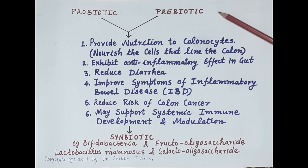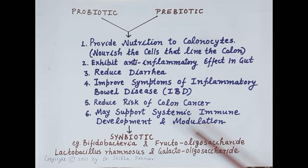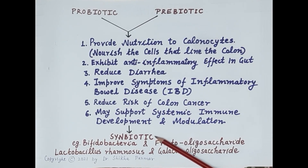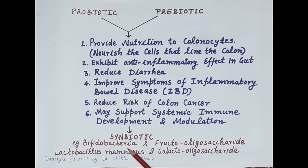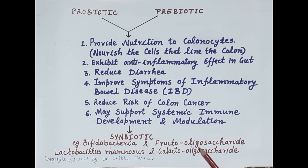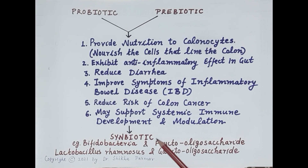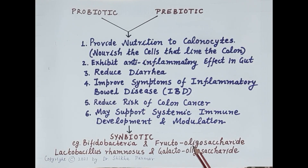A mixture of probiotic and prebiotic is called a symbiotic. This combination is a synergistic combination. For example, Bifidobacteria — a beneficial bacteria (probiotic) — combined with fructooligosaccharide (the dietary fiber, i.e., the prebiotic). Another example of a symbiotic is Lactobacillus rhamnosus and galactooligosaccharide. This mixture is beneficial as it consists of a beneficial microorganism along with the nutrient required for its growth, improving the survival of the microorganism in the gut.